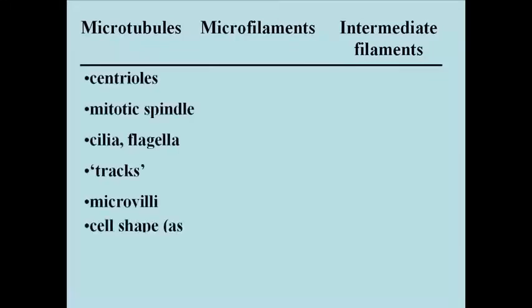This slide summarizes the involvement of cytoskeletal components in either shape or motility in cells. You may recall the role of microtubules in mitosis as the main part of centrioles and as key players in ciliary and flagellar motion. They're also found in the microvilli of cells lining our small intestines — why do you think they're found there? Think about that.